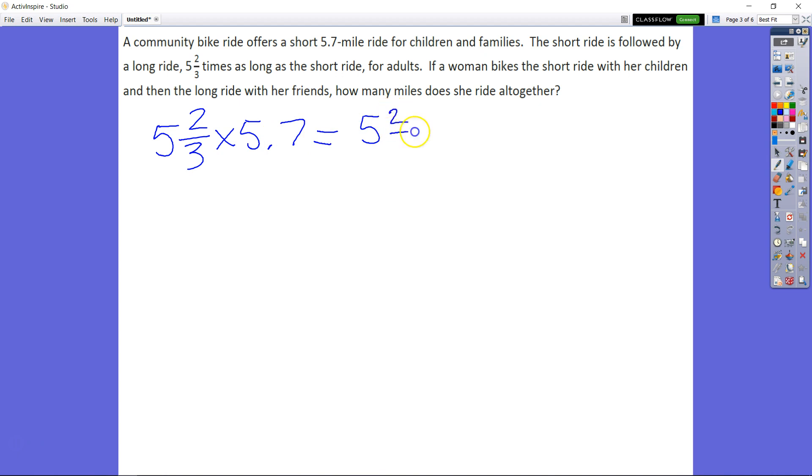We know that we're going to take the amount of the long ride times the short ride. And we say, well, she did both of these. That would be equal to, we're going to say 5 and 2 thirds, change that to improper: 3 times 5 is 15 plus 2 equals 17 thirds.